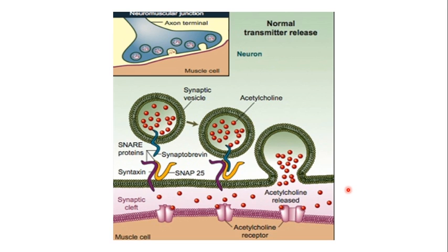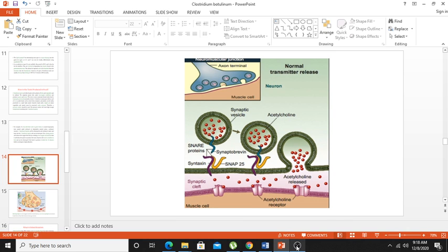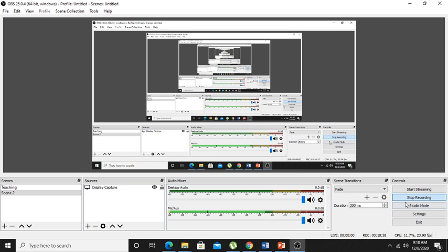Now let's look at how C. botulinum affects the nervous system. Normally at the neuromuscular junction, if these are your muscles and these are the neurons, the neurons release acetylcholine. We will continue this discussion in the next video, focusing on how this neurotoxin actually affects the nervous system.